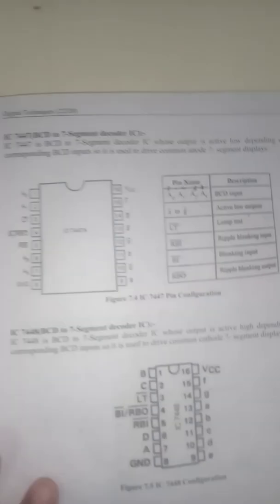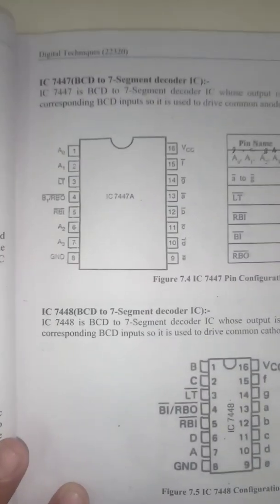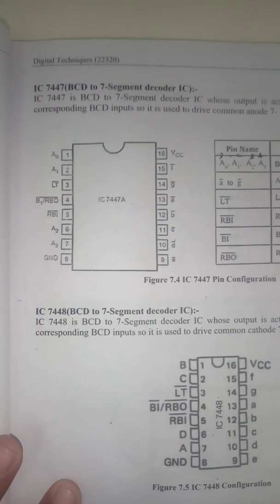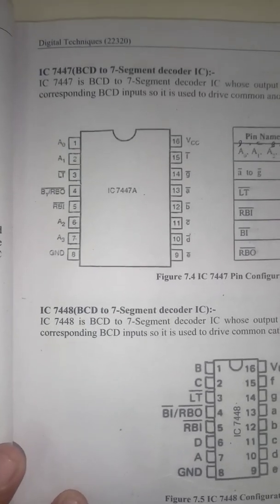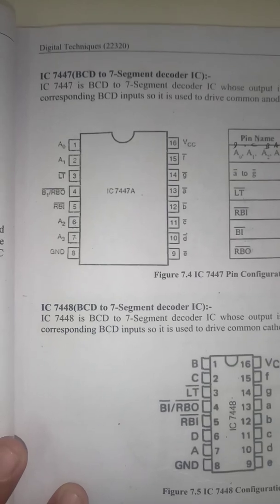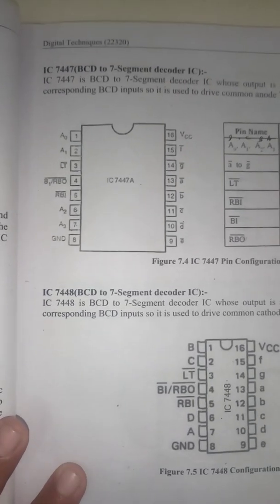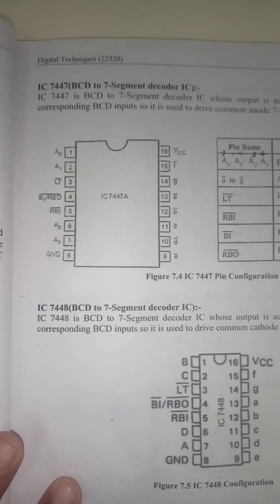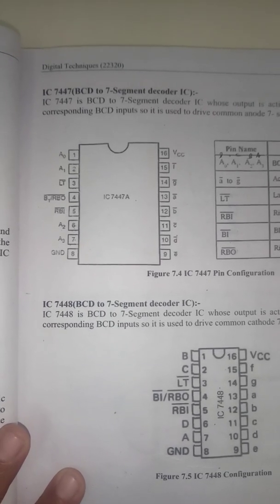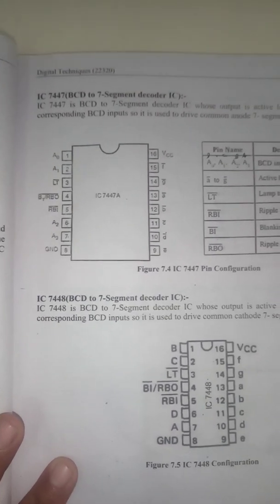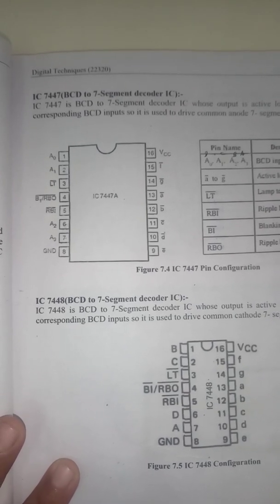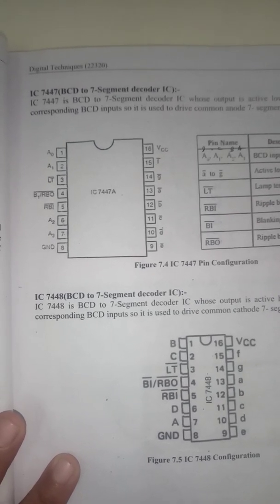First we will see the explanation of IC7447, that is the BCD to 7-segment decoder IC. Pin number 1 and 2 are the inputs: A0 and A1. Likewise, pin number 6 and 7 are A2 and A3. These are the 4 inputs — we are providing 4-bit BCD numbers as input to A0, A1, A2, and A3.